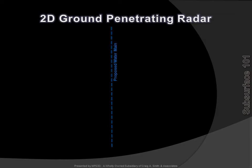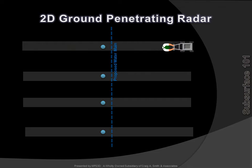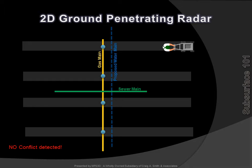Let's say the proposed water main runs a different way. The same 2D scanning methods are utilized. The gas main is detected, like the previous example, and appears not to conflict. The sewer main is again missed. And, due to the grid spacing, an offset in the gas main is also missed. Now, there are 3 potential conflicts that were all missed by traditional SUE methodologies.